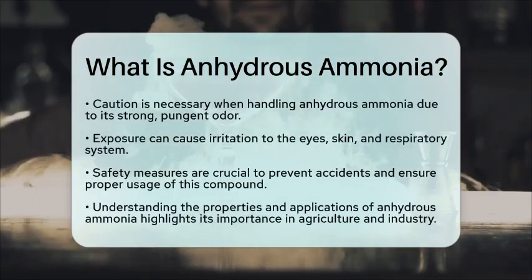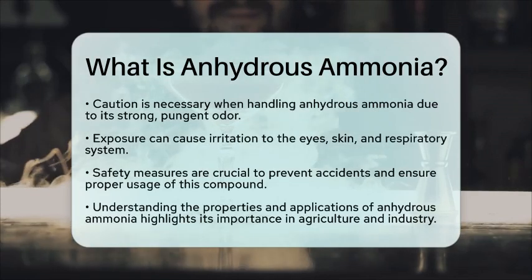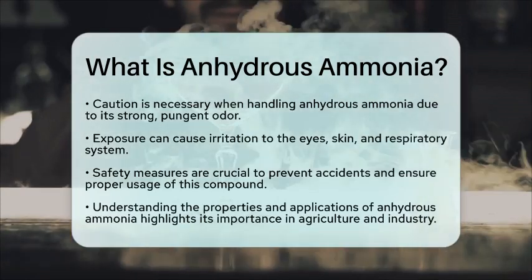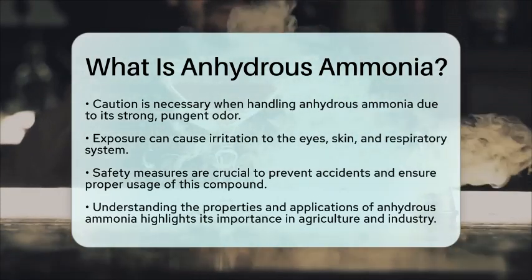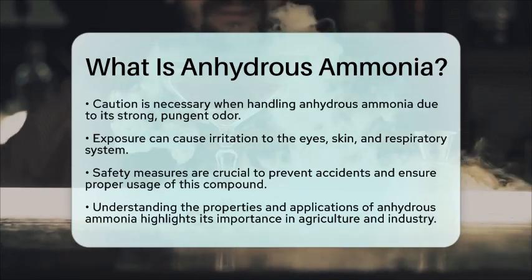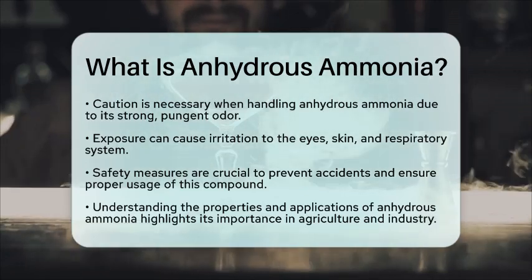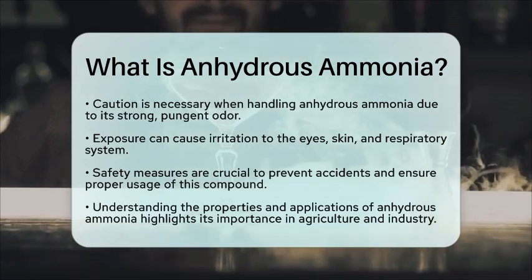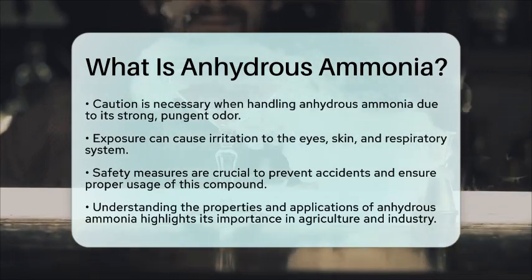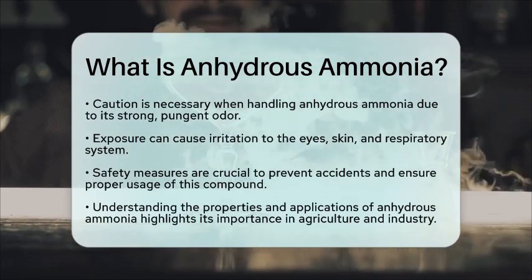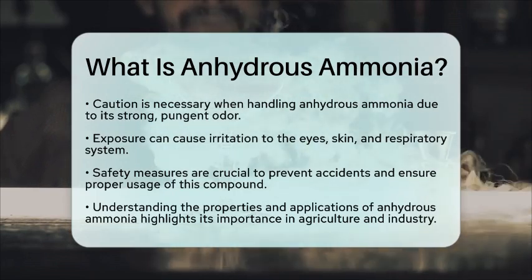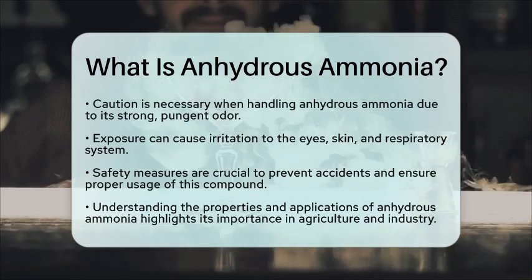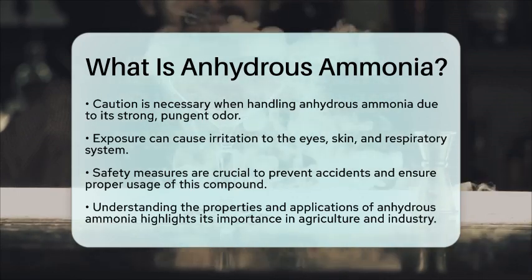Safety measures are essential when working with this compound to prevent accidents and ensure proper usage. In summary, anhydrous ammonia is a versatile chemical with significant roles in both agriculture and industry. Its concentrated form provides essential nutrients for crops and serves various functions in manufacturing processes. Understanding its properties and applications can help us appreciate its importance in our daily lives.